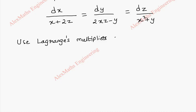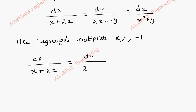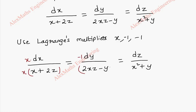For the first multiplier, I'm taking x, 1, and -1 respectively, because we have to look for terms getting cancelled when we apply the ratio property. Copying the terms as is: dx/(x + 2z) = dy/(2xz - y) = dz/(x² + y). We multiply x with both numerator and denominator of the first part, multiply -1 with the second part, and -1 with the third term as well.